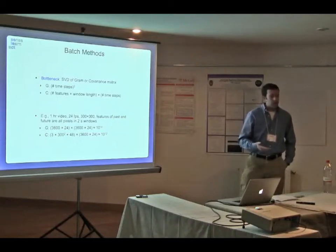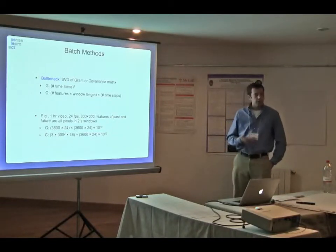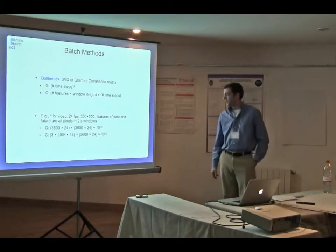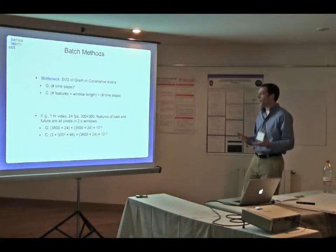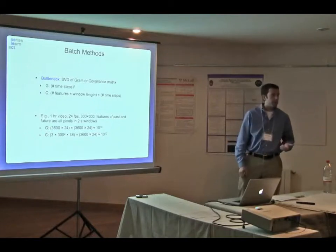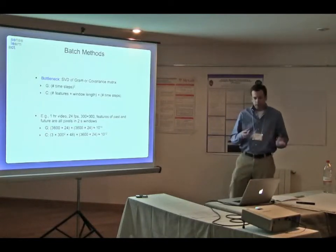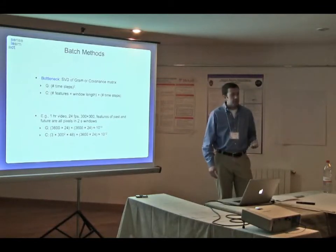If we have a lot of features or a lot of data points, we might not be able to store the Gram matrix or the covariance matrix in memory, much less be able to compute a singular value decomposition of it. For example, let's say I want to learn a model of a video. I have one hour of video at 24 frames per second, each frame consists of 300 by 300 pixels. Our features of the past and future, these sequences of observations, might consist of all pixels in two-second windows.